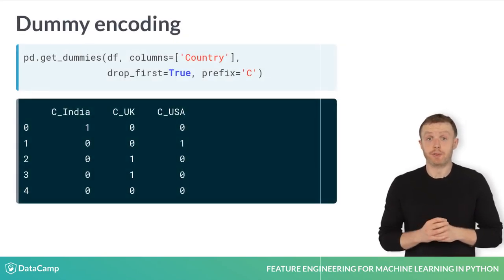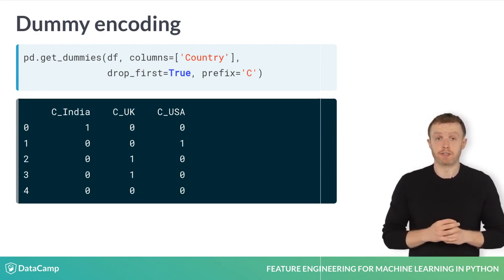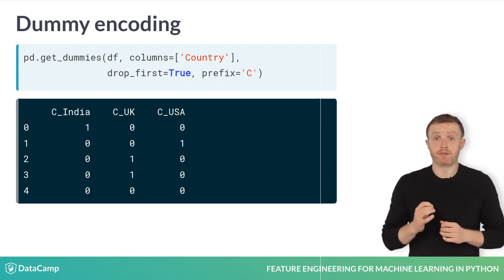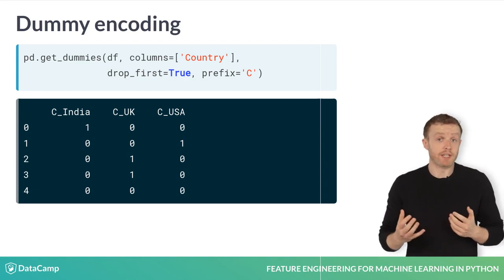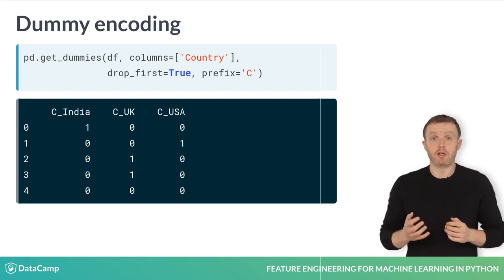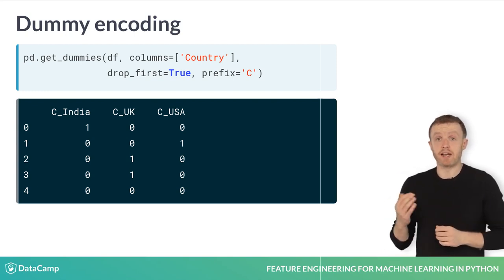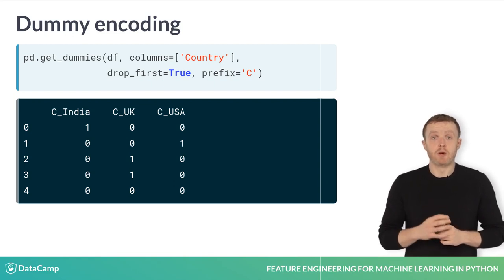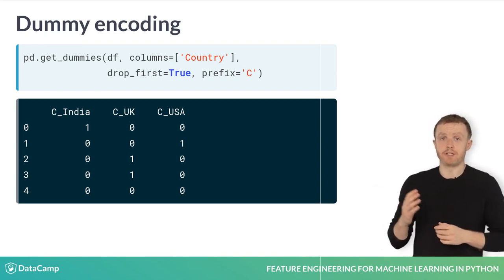On the other hand, dummy encoding creates n minus one features for n categories, omitting the first category. Notice that there is no feature for France, the first category. In dummy encoding, the base value — France in this case — is encoded by the absence of all other countries, as you can see in the last row, and its value is represented by the intercept. For dummy encoding, you can use the same get_dummies function with an additional argument, drop_first, set to true.